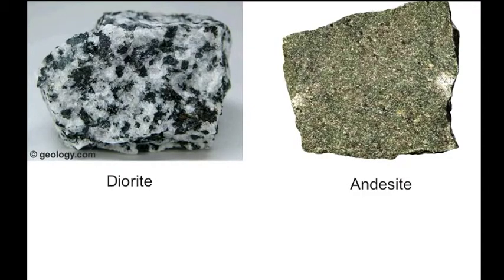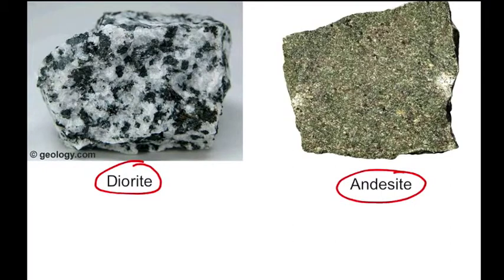Let's briefly compare and contrast two igneous rocks. The one on the left is diorite, and the one on the right is andesite. They're actually both composed of exactly the same minerals — plagioclase, hornblende, and pyroxene — so chemically they're the same, but they have different names and they look different. Well, one of them cooled as magma very slowly, and the other cooled as magma that erupted into lava very quickly.